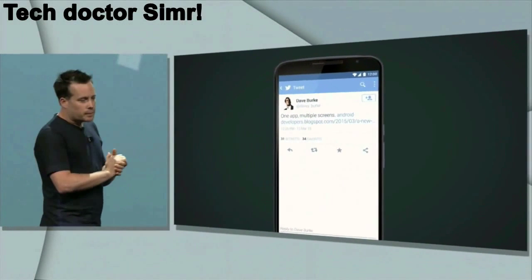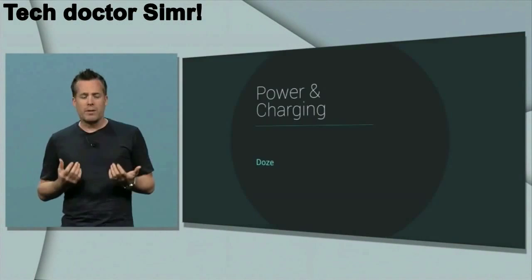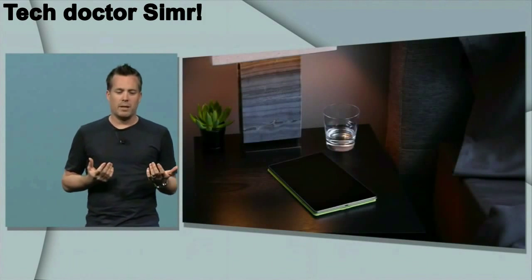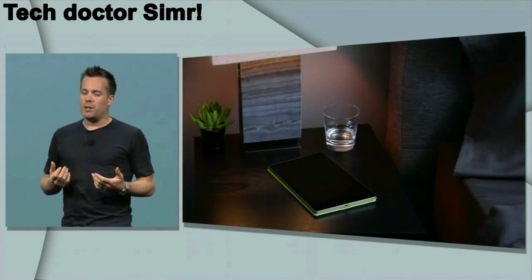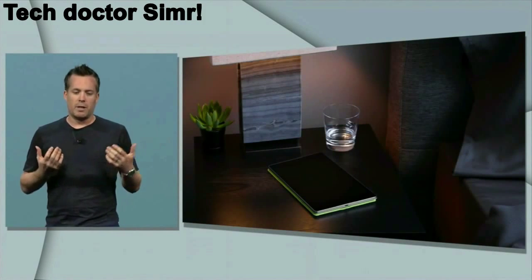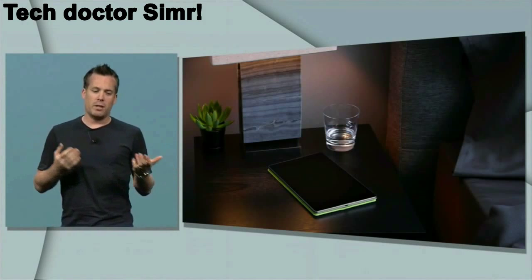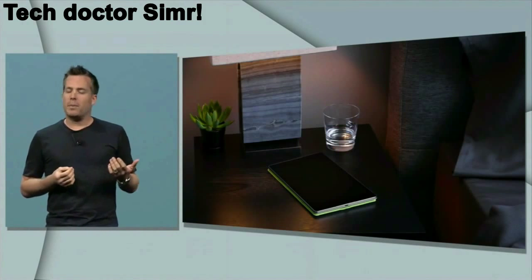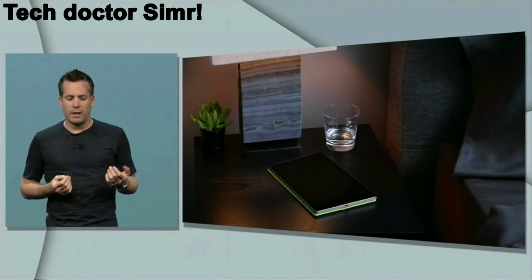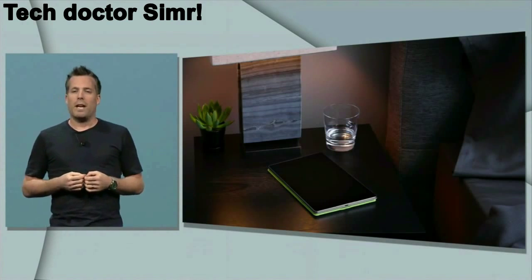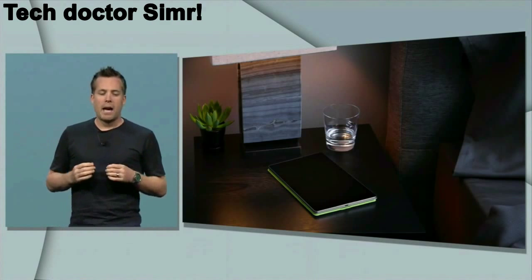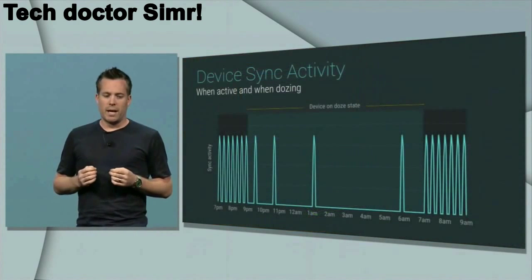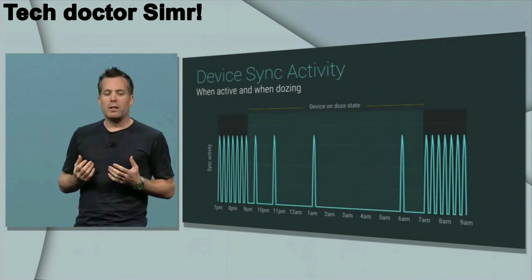Another thing is that Android M has included power and charging improvements, including a feature like Doze. When the phone is in sleep mode it actually discontinues the major power supply to background things and saves a lot of power.